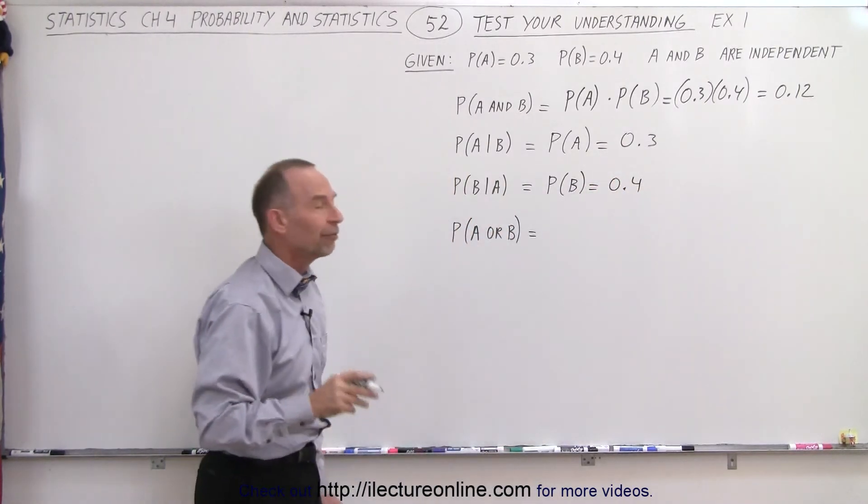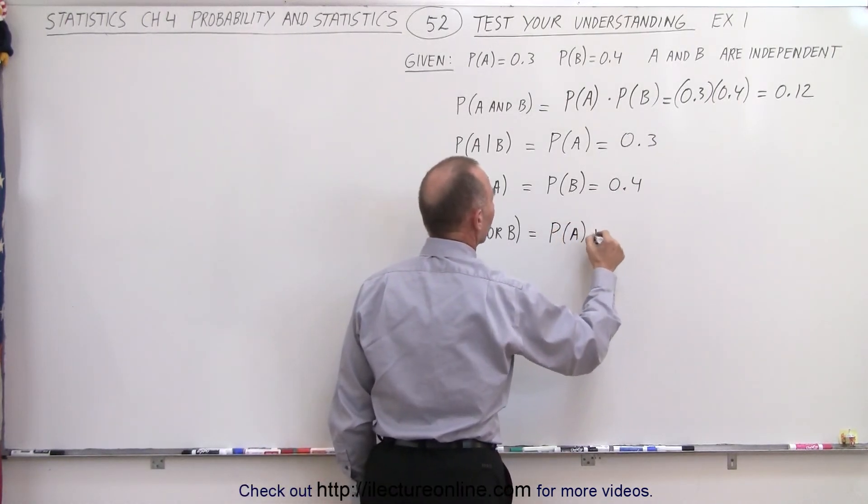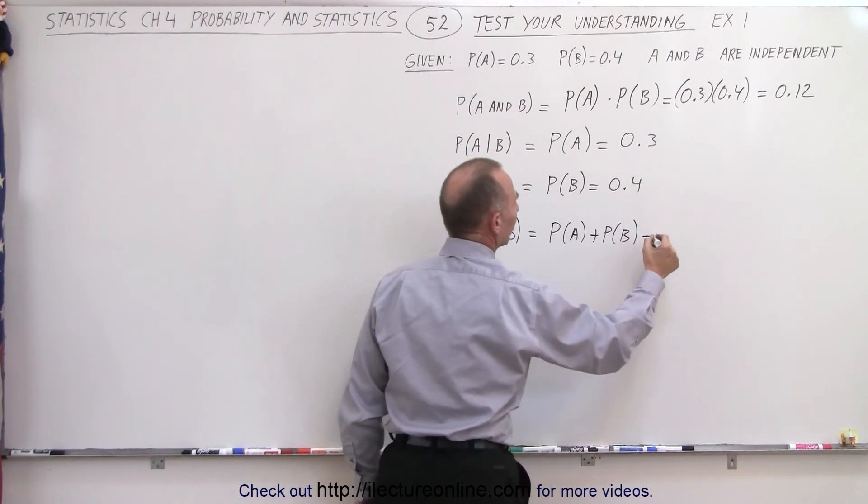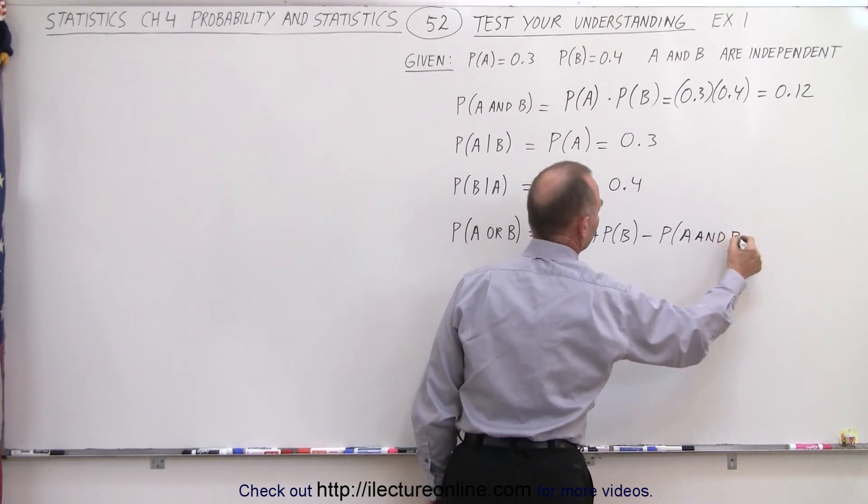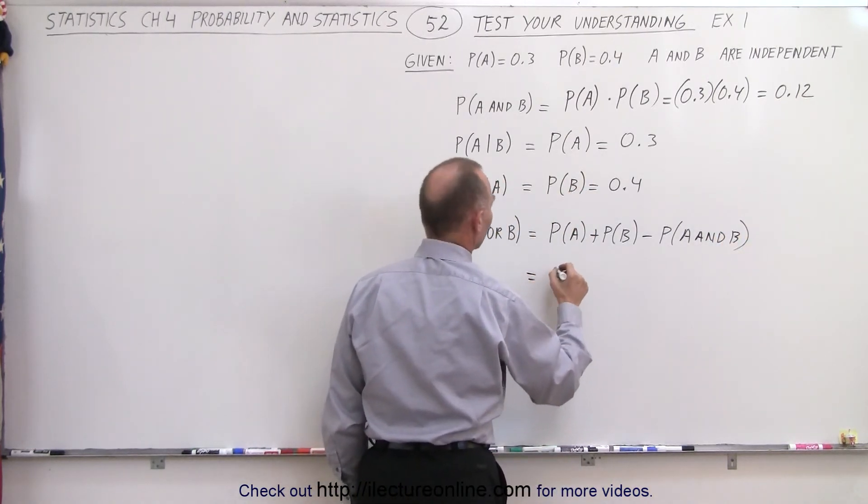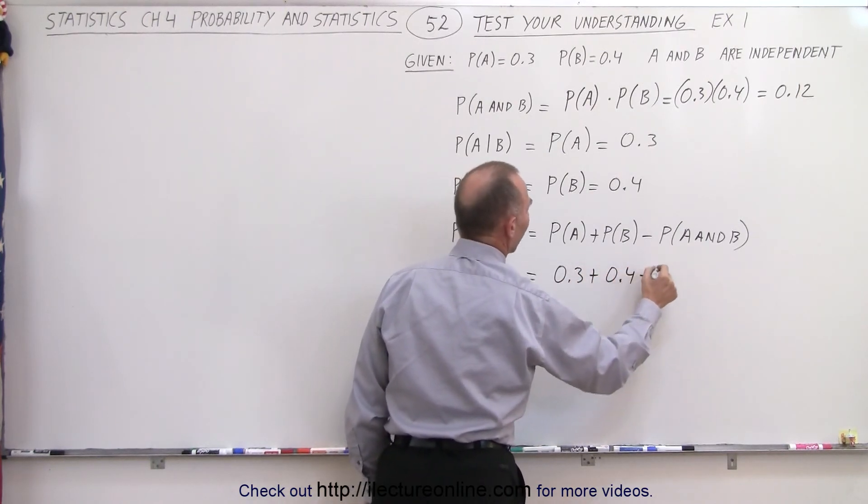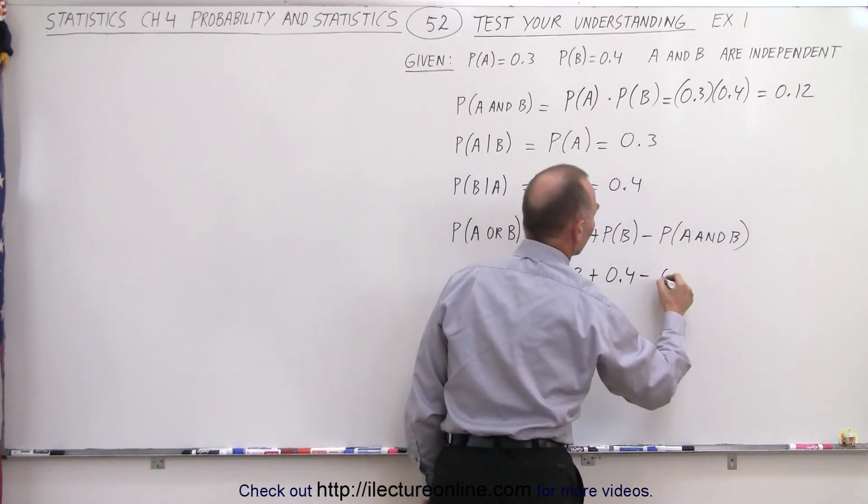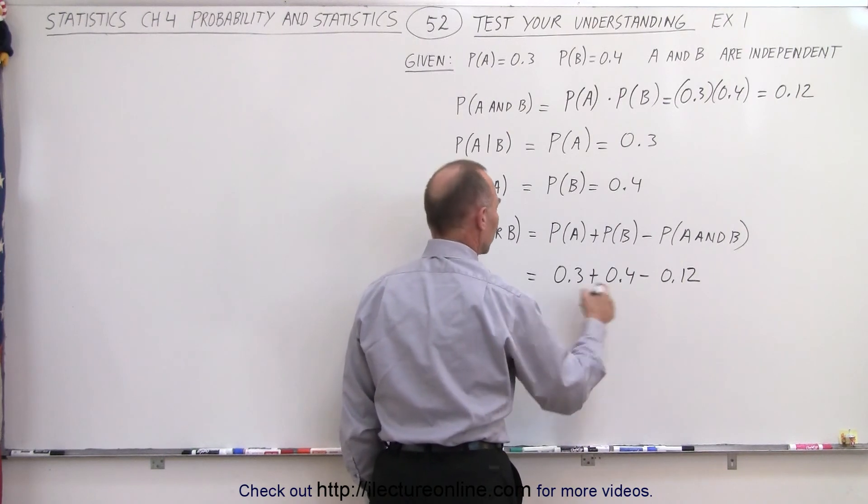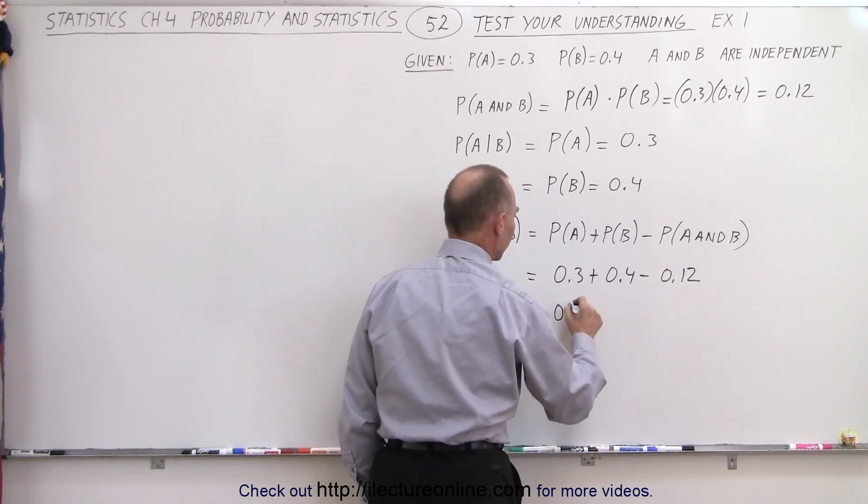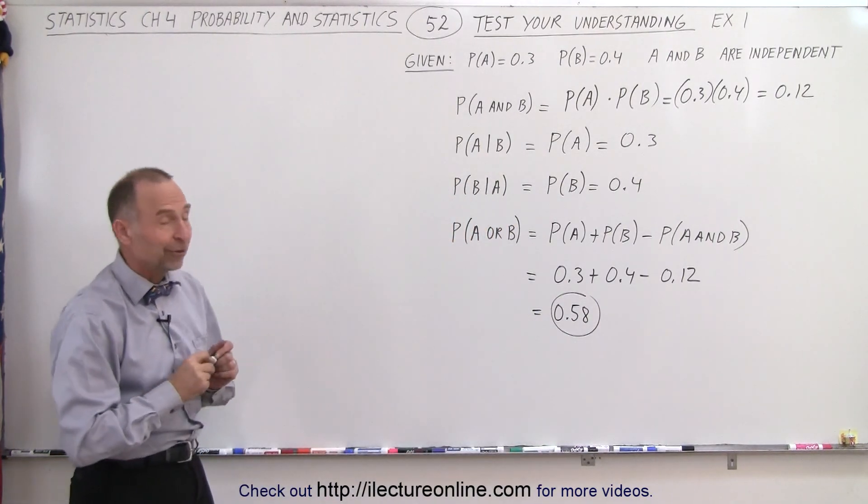And finally, the probability of A or B will be equal to the probability of A plus the probability of B minus the probability where they overlap, which is A and B. In this case, that is 0.3 plus 0.4 minus 0.12. That's 0.7 minus 0.12, so this equals 0.58, which is the probability of A or B. And that is how it's done.